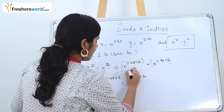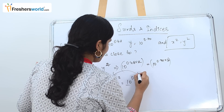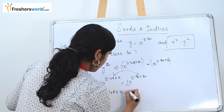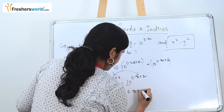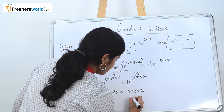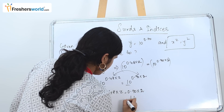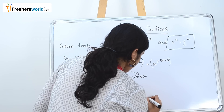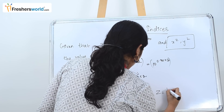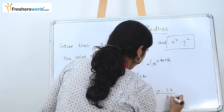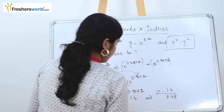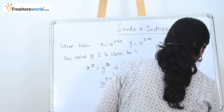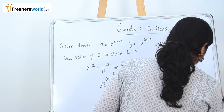As these two values are equal, we can equate them directly. So 0.48 into z is equal to 0.70 into 2. Now 2's are 1.4. So 0.48 into z is equal to 1.4, which can be written as z is equal to 1.4 divided by 0.48. 1.4 divided by 0.48 is nothing but approximately 2.9.